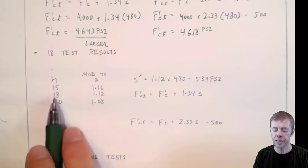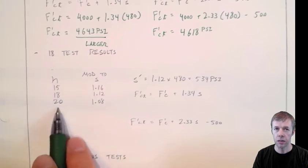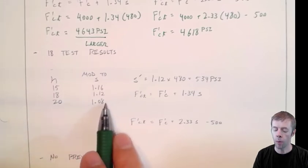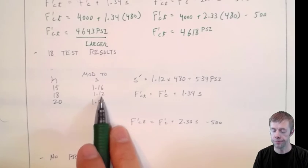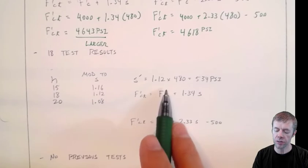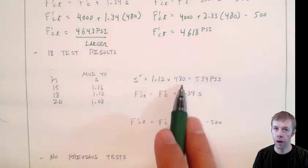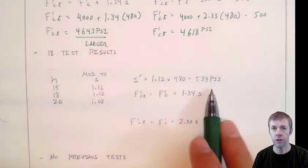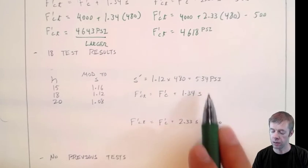So I'm going to interpolate here, because 18 is between 15 and 20. So I'm going to interpolate and get 1.12. That's my modification factor. So I'm going to take 1.12, multiply it by 480, and I get 534 psi.